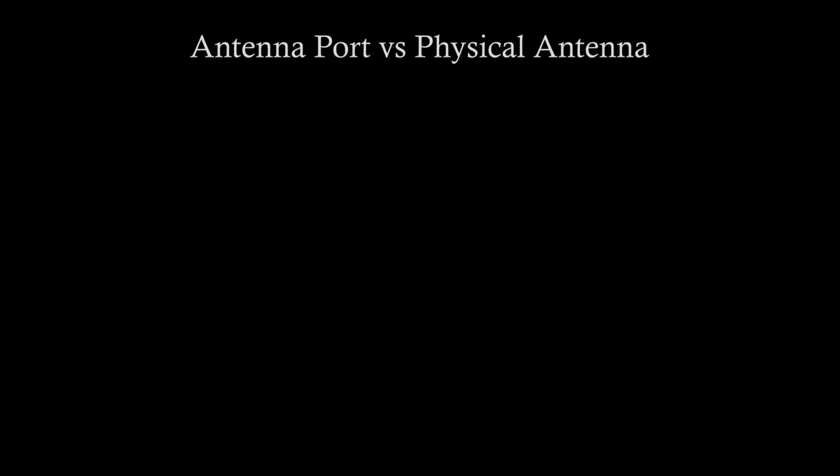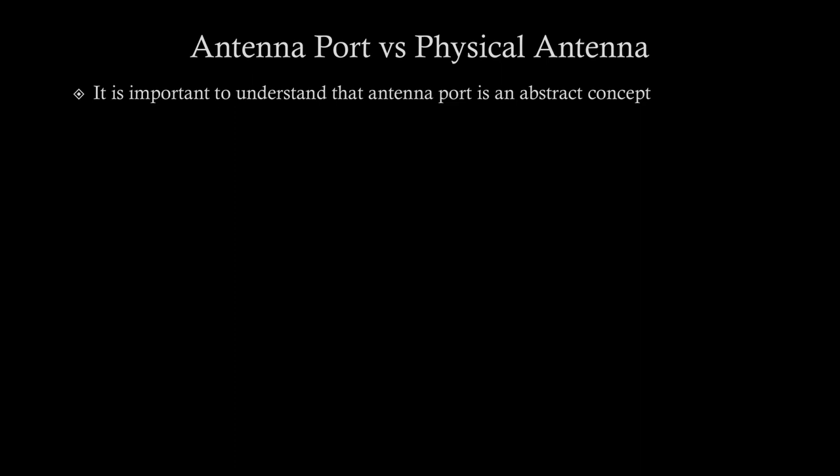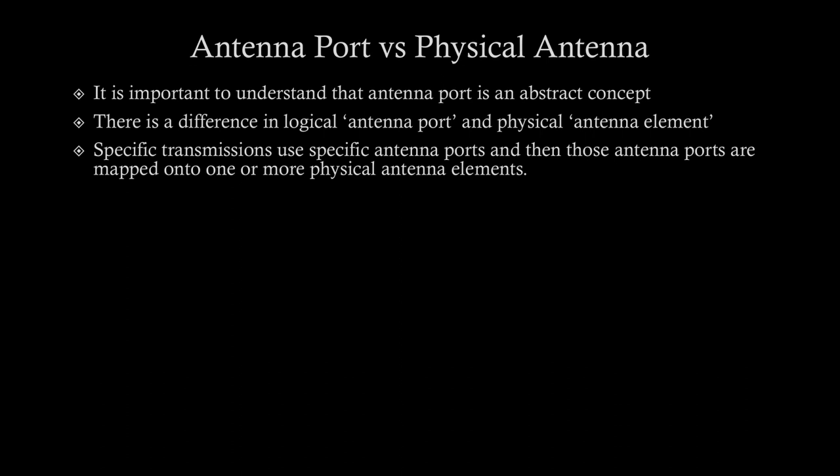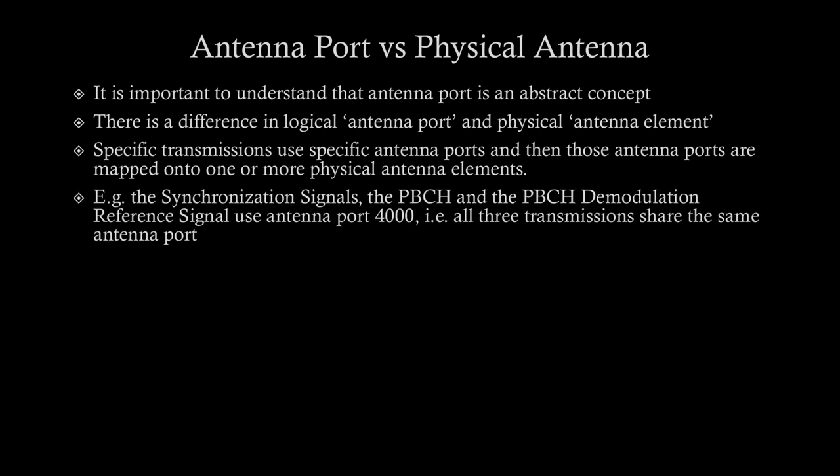It is important to understand that an antenna port is an abstract, logical concept — not a physical thing. There is a difference between a logical antenna port and a physical antenna element. Specific transmissions use specific antenna ports, and those antenna ports are mapped onto one or more physical antenna elements. The entity actually transmitting the signal is the physical antenna, but abstractly it is the antenna port, and the mapping between them can be one-to-one or one-to-many.